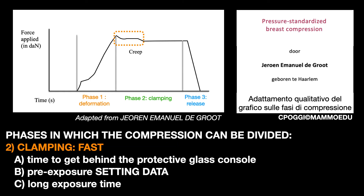The second phase, on the other hand, has to be very fast, to minimise the patient's discomfort. Remember that the radiographer has to get behind the protective glass console, and sometimes the ergonomics of the room you work in is not ideal. A pre-exposure is performed to determine the right exposure settings — choice of target filter and so on — and the exposure times are in any case long. We must shorten the clamping phase as much as possible.